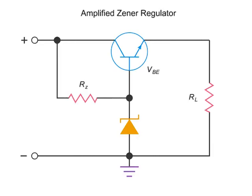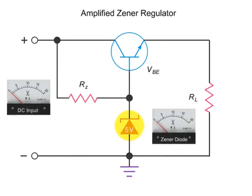An amplified Zener regulator controls voltage levels across a circuit. The regulator gets its name from its primary component, the Zener diode. The Zener diode is a fixed diode that maintains a given voltage value, no matter what the unregulated DC input might be.